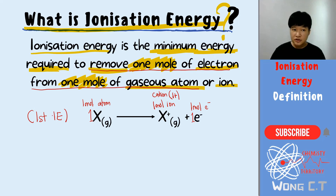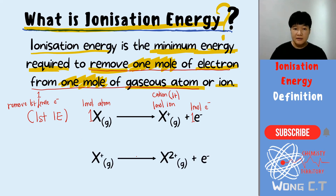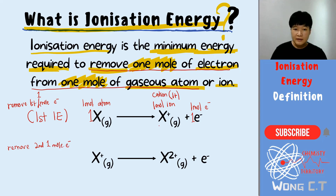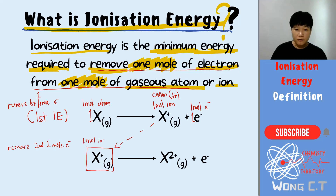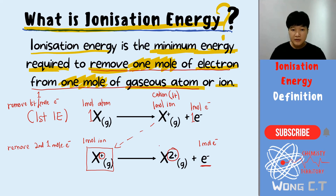What happens next is you remove the second mole — that is, a second round of one mole of electron. Your X⁺ gas is coming from the product, that is your one mole of ion. Then you remove one more mole of electron, and from this one positive charge you will form a two positive charge.